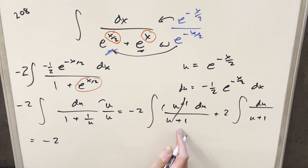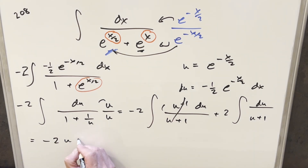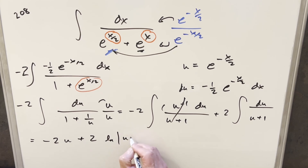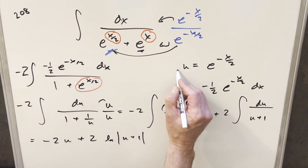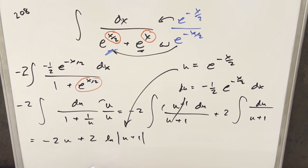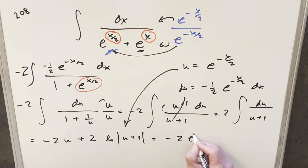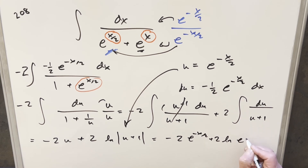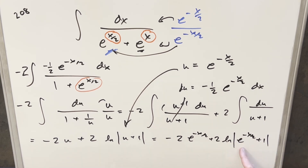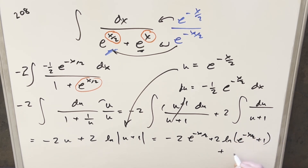Let's go ahead and integrate. We have minus 2 times u, plus 2 times natural log of the absolute value of u plus 1. Back-substituting to finish off: the final solution is minus 2 times e to the minus x over 2, plus 2 times natural log of e to the minus x over 2 plus 1. Since the exponential is always positive, we can remove the absolute value. Add parentheses and plus C, and that's it.